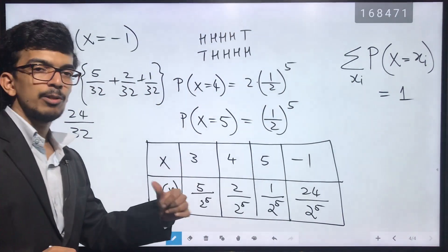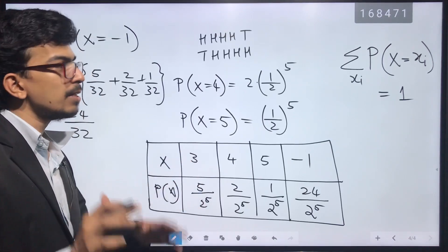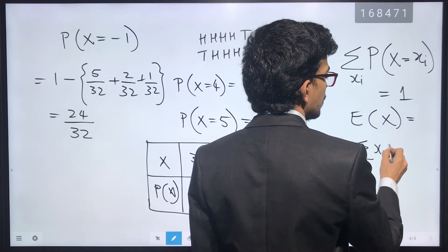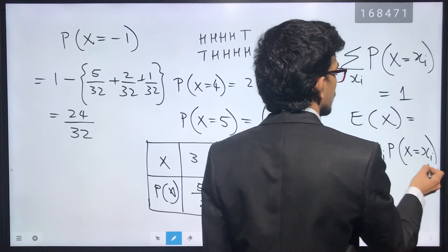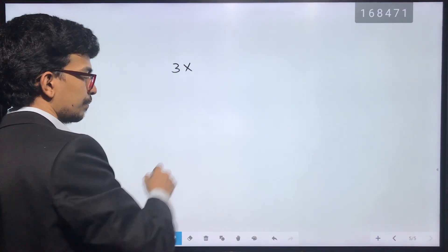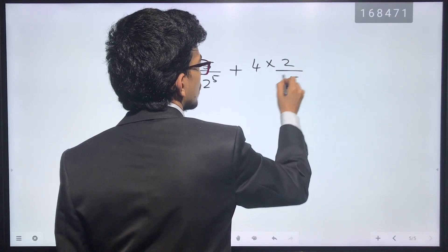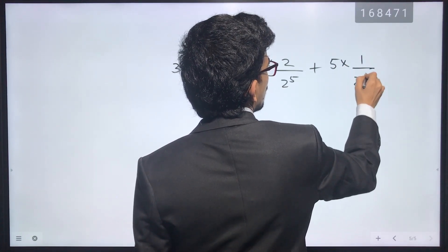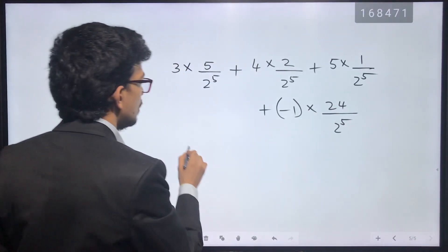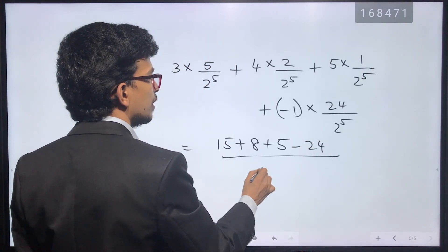The expected value of X equals the sum of x_i times P(X = x_i): that is 3 times (5/2^5) plus 4 times (2/2^5) plus 5 times (1/2^5) plus minus 1 times (24/2^5). Simplifying: 15 plus 8 plus 5 minus 24, all divided by 2^5.